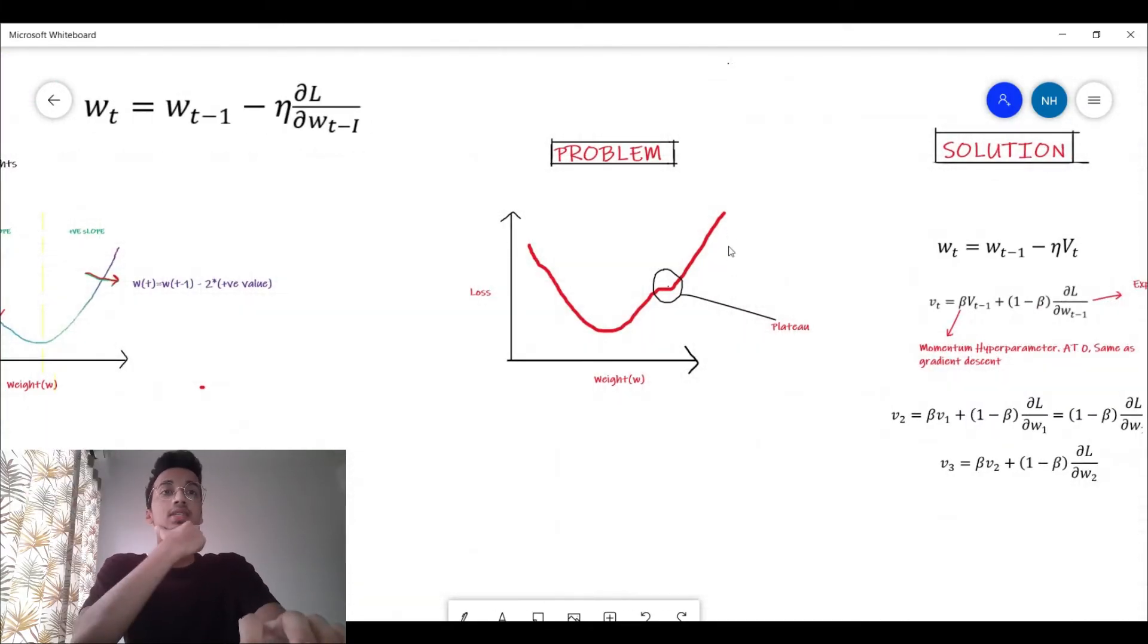You can see that this curve is getting a little flat over here at some point. This is also called as the plateau, and the actual point in the graph where the loss is truly the minimum value is called the global minima. Our goal is to reach the global minima.